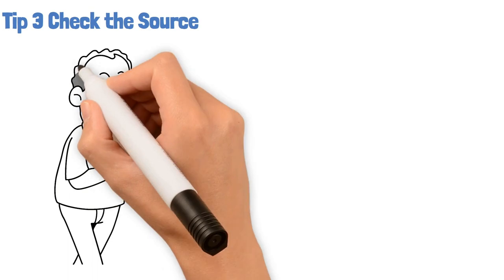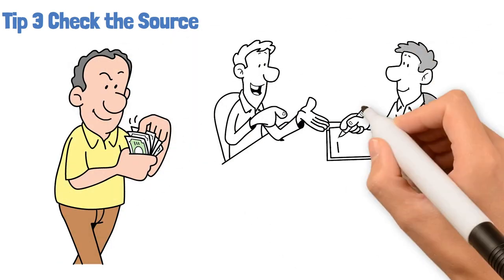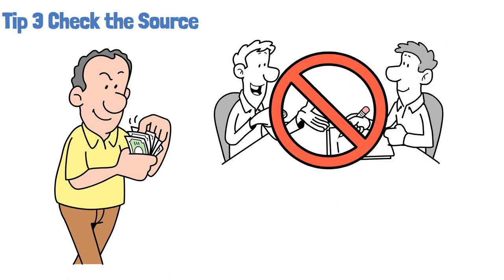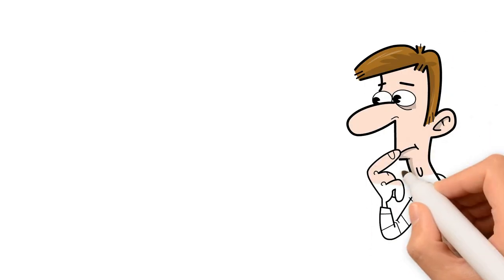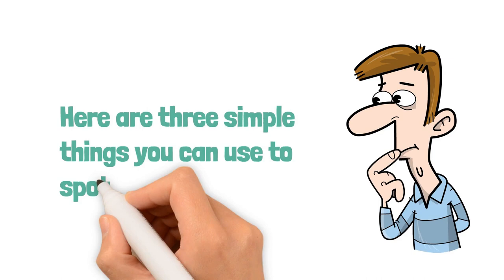Tip number three, check the source. Legitimate investments come from legitimate sources. If you can't find solid information about the investment or the person offering it, it's time to walk away. While you check your investments to see if they are scams or not, here are three simple things you can use to spot the scams. Let's break it down.